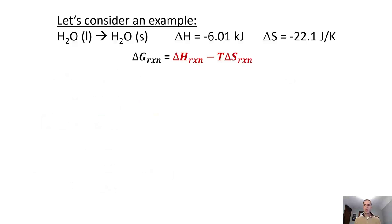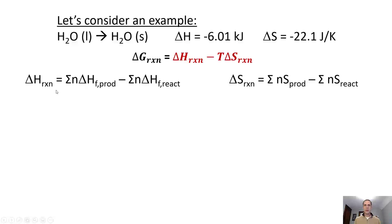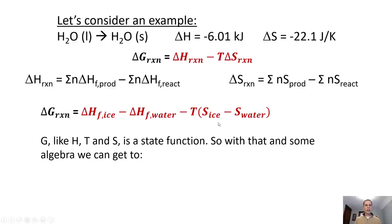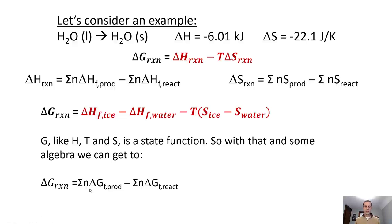There's a bit more we can do. We've got delta G equals delta H minus T delta S, and we also have ways to find delta H of the reaction from delta H of formations, and delta S of the reaction from the entropies of products minus reactants. Putting those together, we get the delta H of formation of products minus reactants, then subtract T times the entropy terms. Since G, like enthalpy and entropy, is a state function, its change depends only on the final and initial states. With a little algebra, we find that delta G of the reaction equals the sum of delta G of formation of products minus the sum of delta G of formation of reactants.